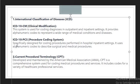The second system is Current Procedural Terminology (CPT). CPT is developed and maintained by the American Medical Association (AMA). It is a comprehensive system used for coding medical procedures and services. For example, when performing an operation for some diagnosis, CPT provides the information regarding those procedures and services. It also includes codes for a variety of healthcare provisional services, such as ambulance services and others.